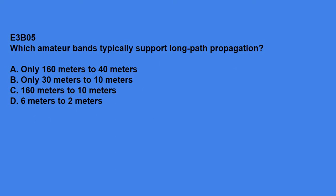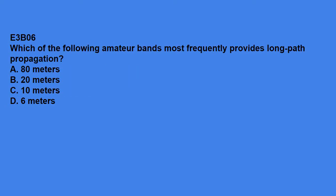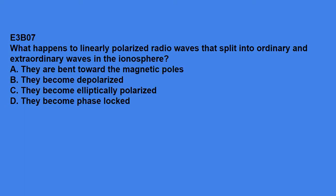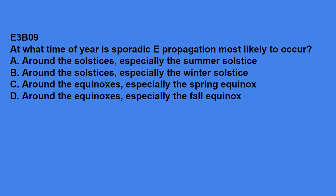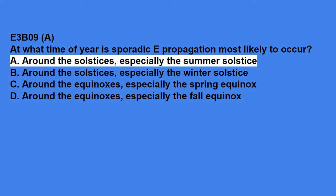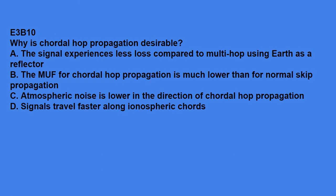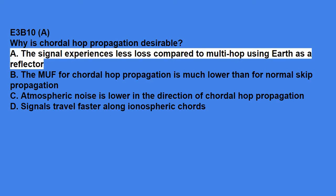E3B05, which amateur bands typically support long path propagation? 160 meters to 10 meters. E3B06, which of the following amateur bands most frequently provide long path propagation? That answer is 20 meters. E3B07, what happens to linearly polarized radio waves that split into ordinary and extraordinary waves in the ionosphere? They become elliptically polarized. E3B08 has been removed from the question pool. E3B09 says, at what time of year is sporadic E propagation most likely to occur? Around the solstice, especially the summer solstice. E3B10, why is chortle hop propagation desirable? The signal experiences less loss compared to multi-hop using earth as a reflector.